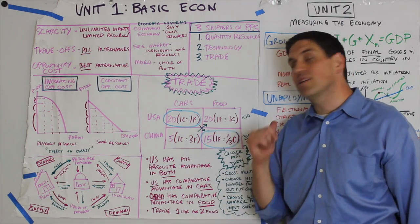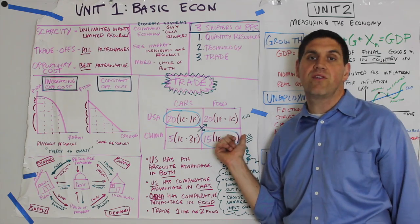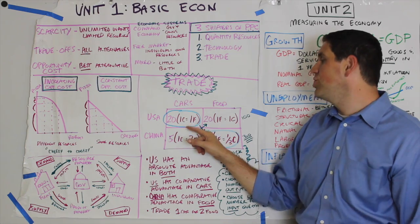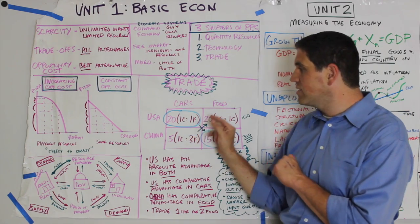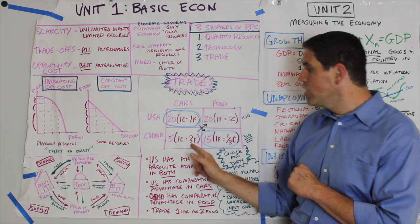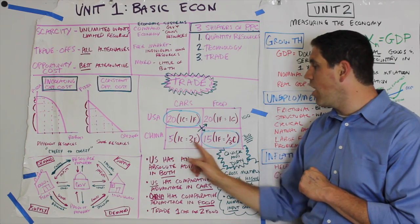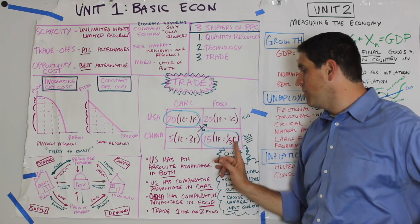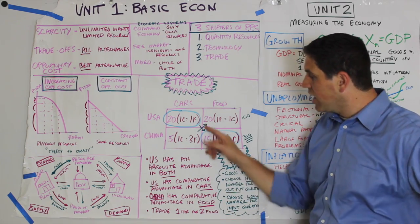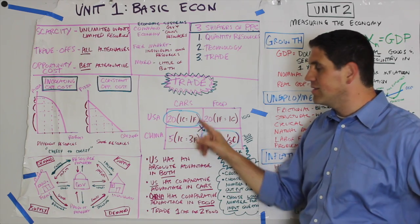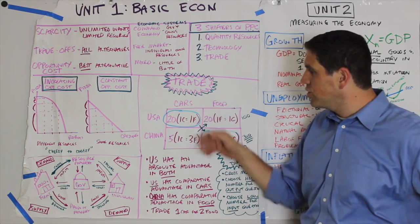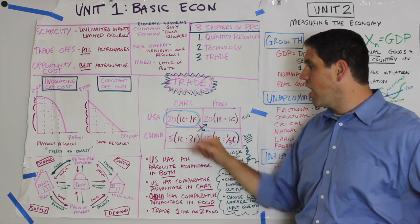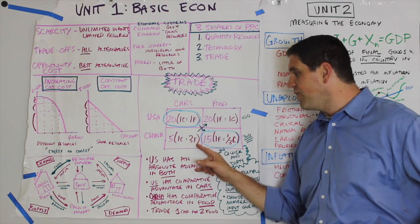Talking about trade, a key concept on the macro exam is comparative advantage. You set up the country on the left and the products on top, then calculate the per-unit opportunity cost. For example, if China can produce five cars or 15 food, each car costs them three food. The country with the lower opportunity cost has comparative advantage. So the United States should produce cars because they only give up one food per car, while China gives up three.